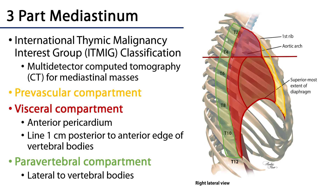We can contrast this with the three-part scheme, developed by the International Thymic Malignancy Interest Group, or ITMIG, in 2017. They set out to construct a schema based on solid multi-detector CT technology with designated landmarks, allowing specific discussion of the locations of various mediastinal malignancies or masses. This is a three-compartment system. The superior boundary is still rib one and the inferior boundary is still the diaphragm, but how they divide up that space varies.